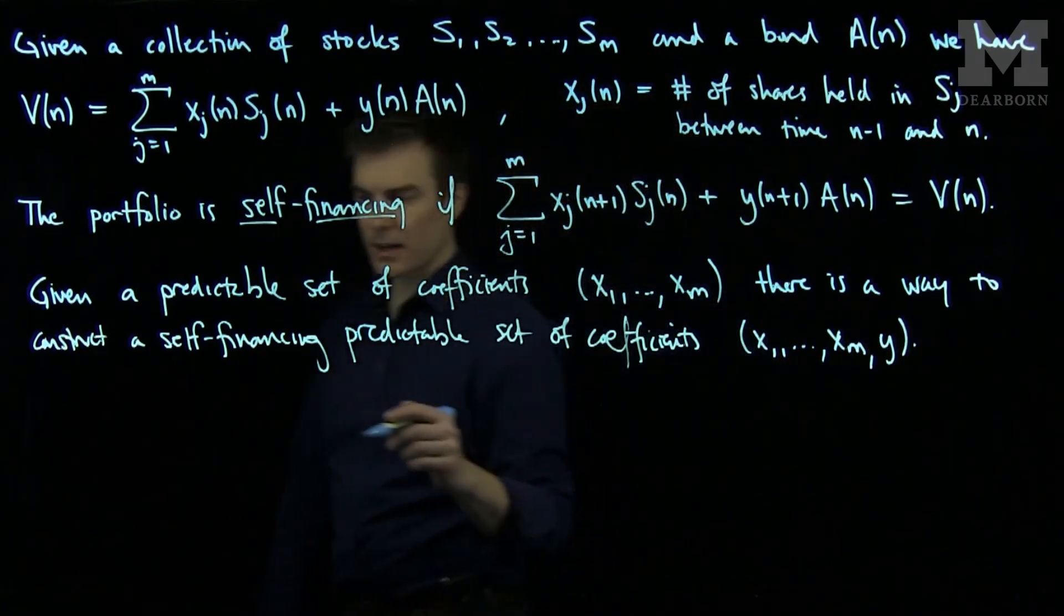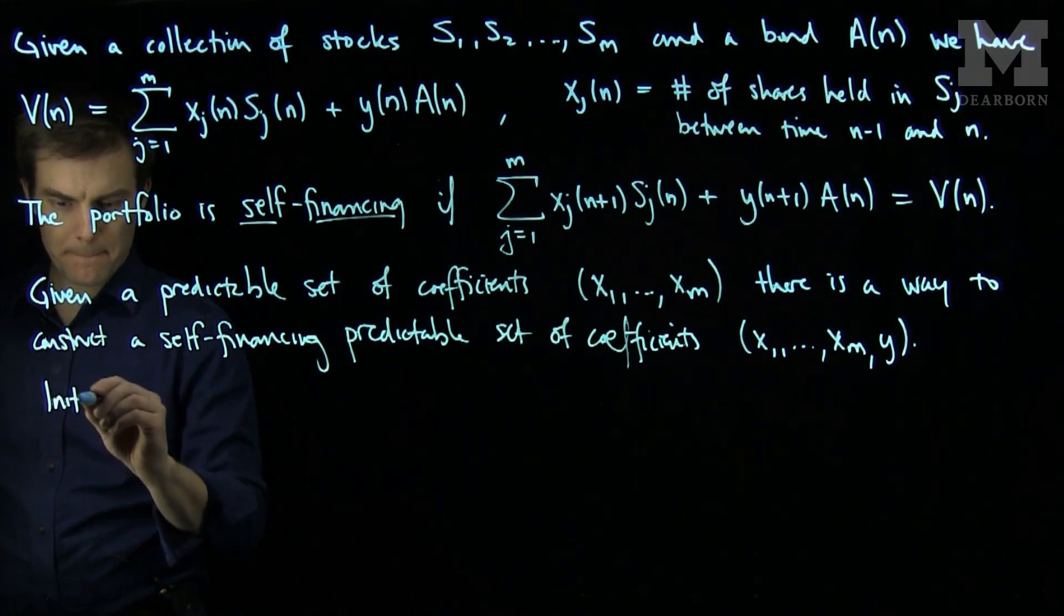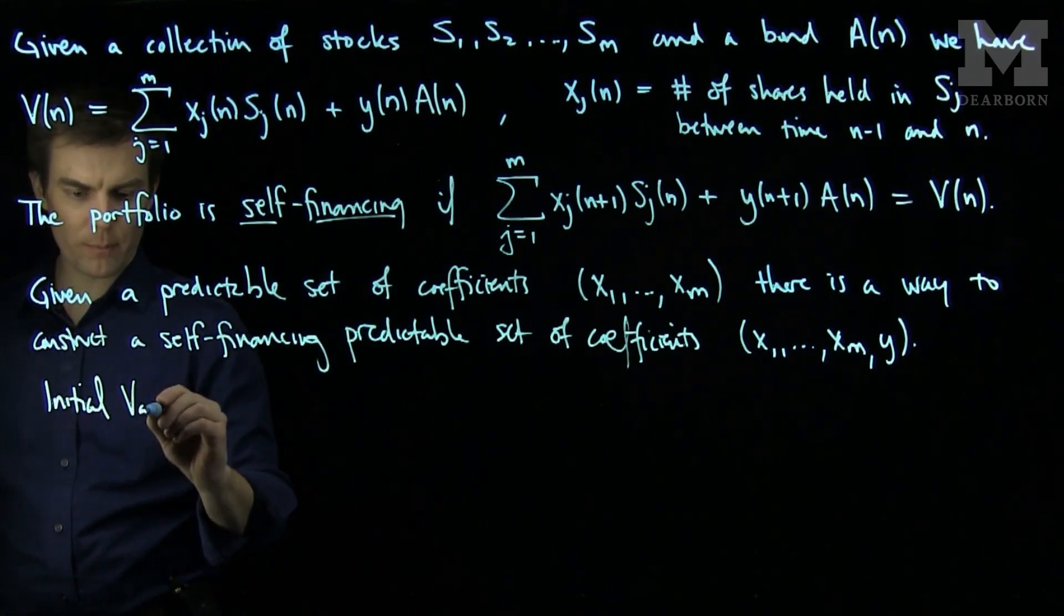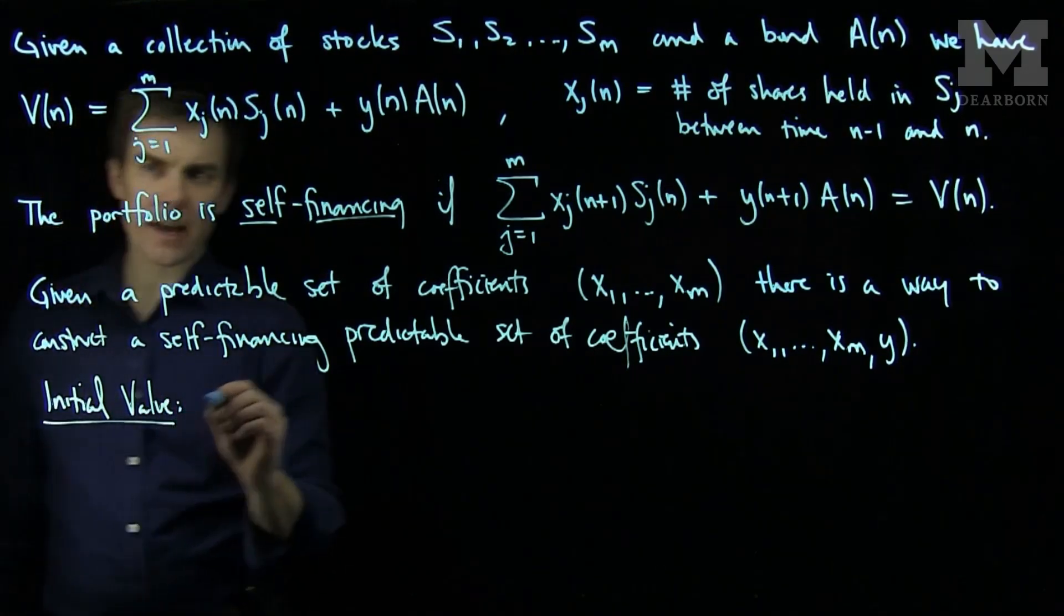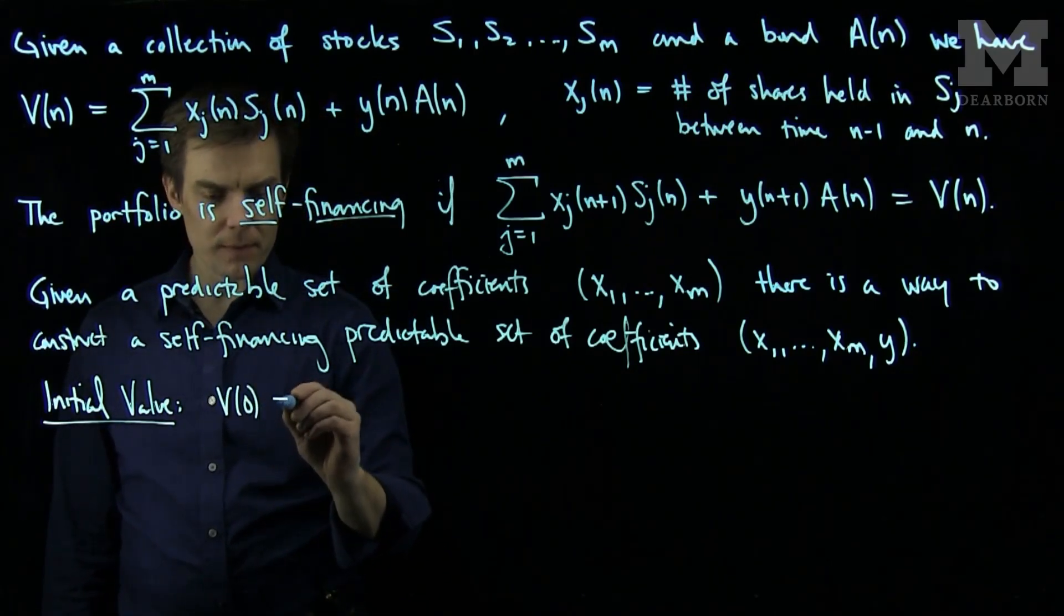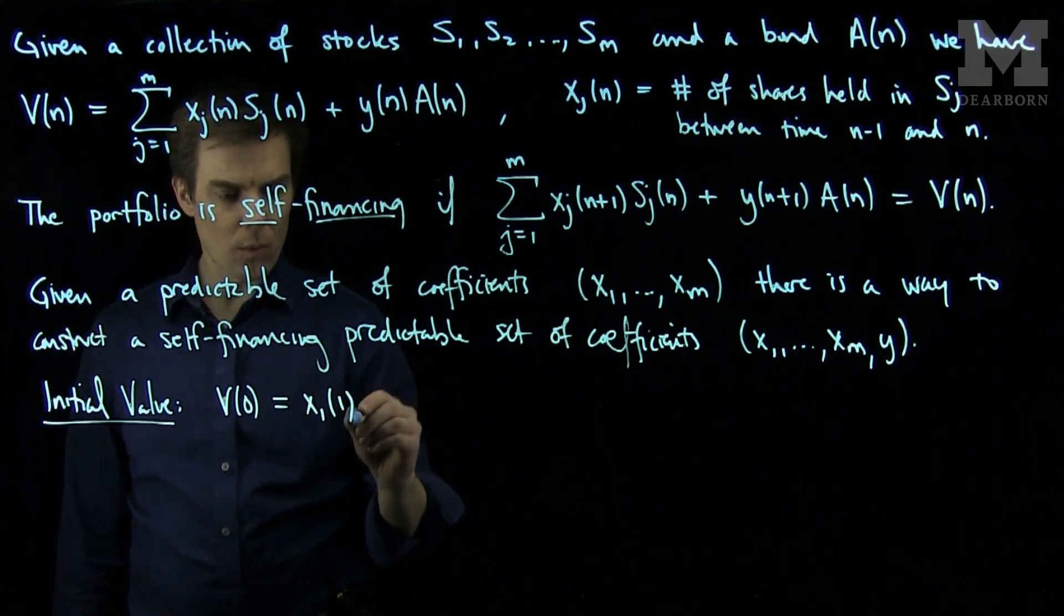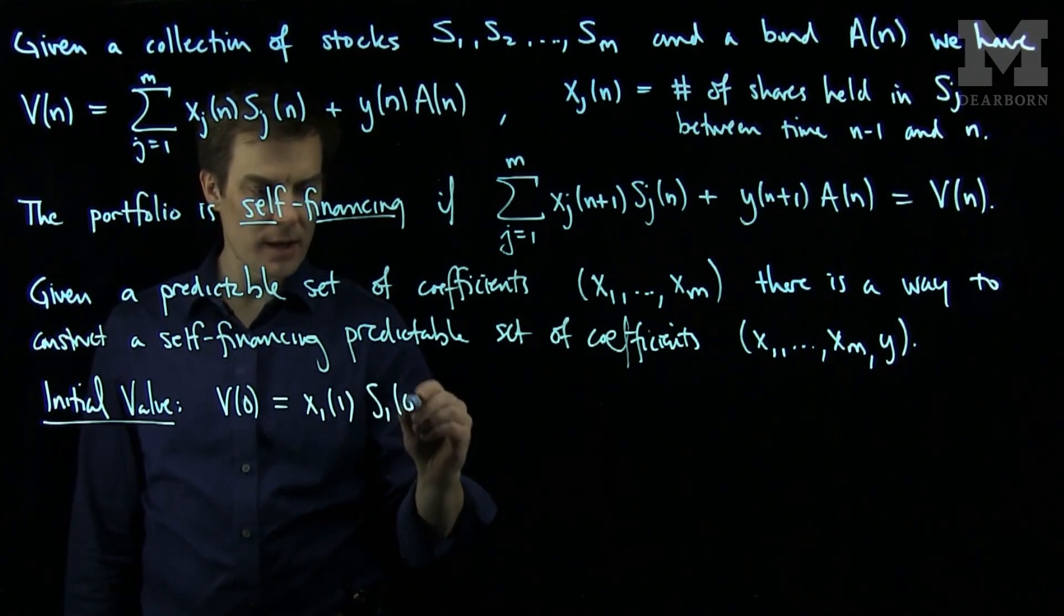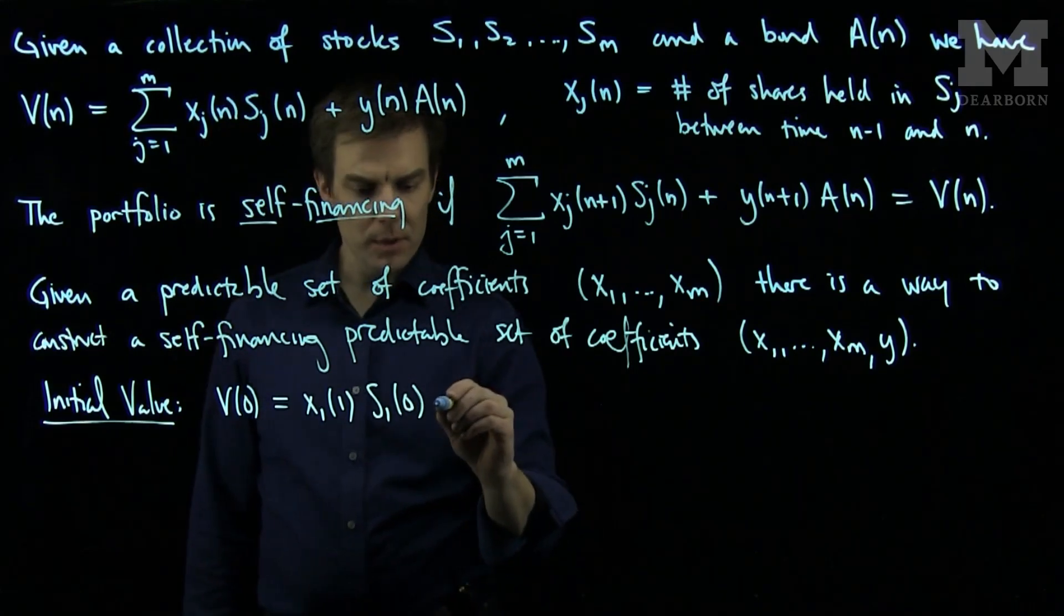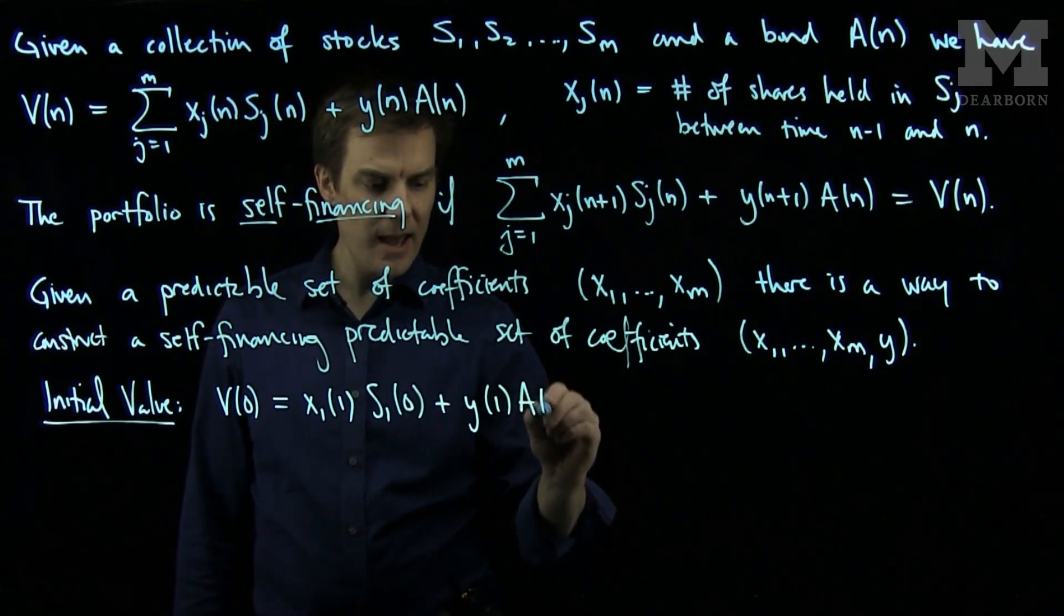The basic idea is the following. Our initial value of our portfolio in the case where there's just one stock will be V(0) equals X1(1) S1(0) plus Y1 A(0).